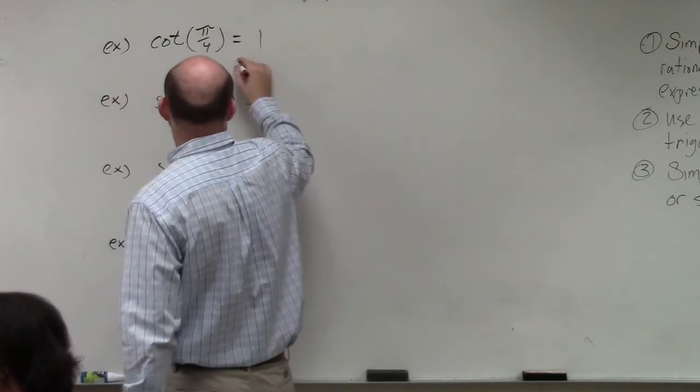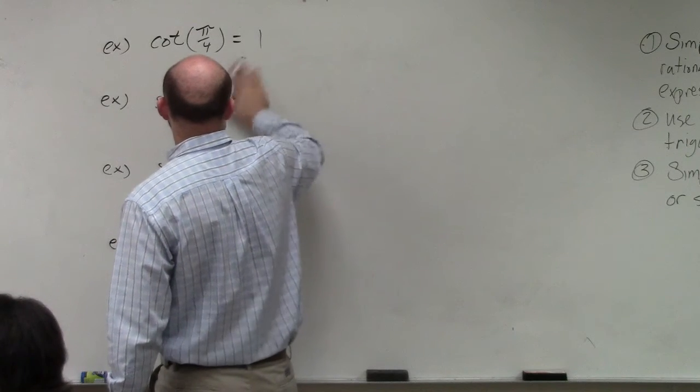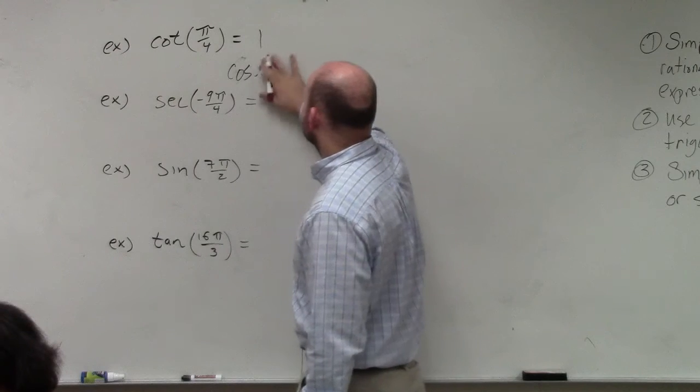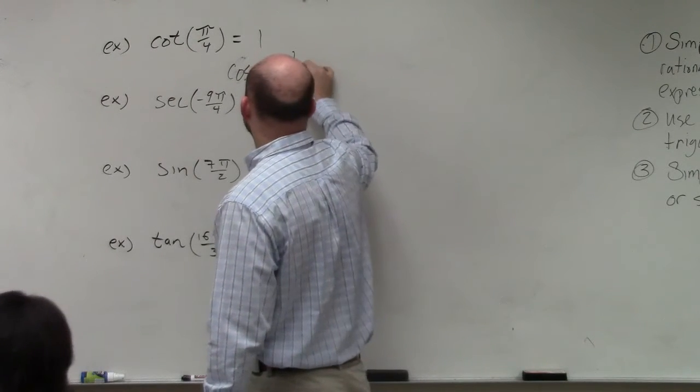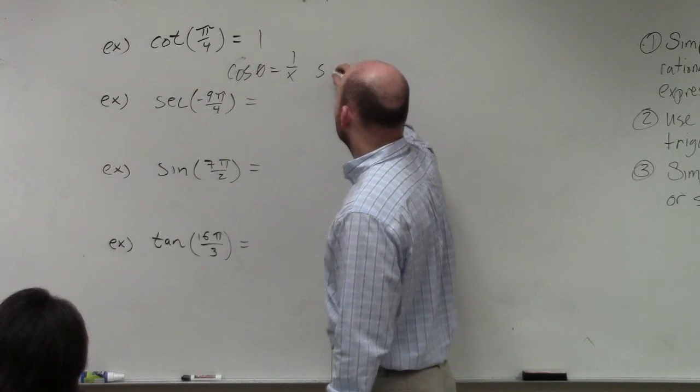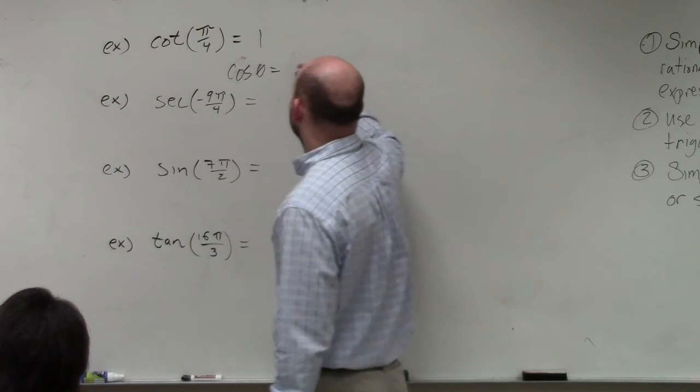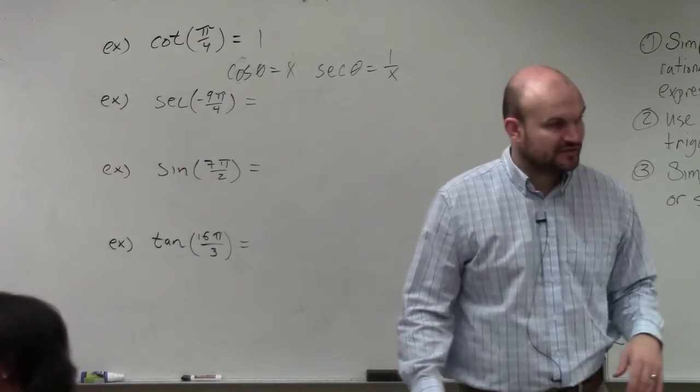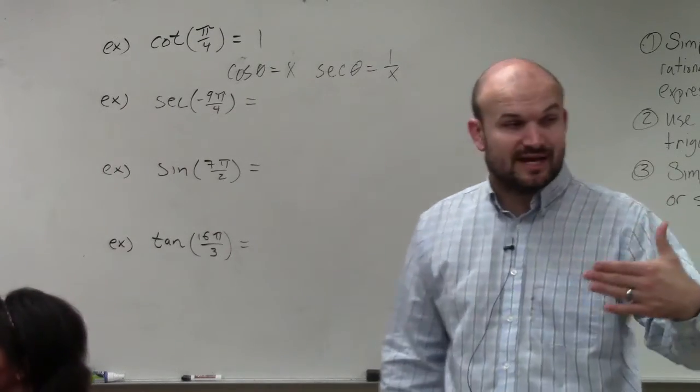A couple things you need to remember about secant. We know that cosine of theta is equal to 1 over x. So therefore, the secant of theta is 1 over x. They are reciprocals of each other. We're actually going to go over this further again today.